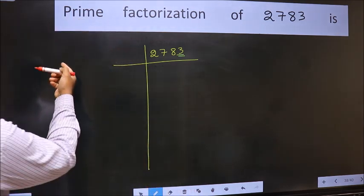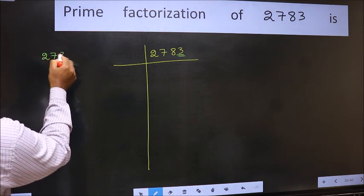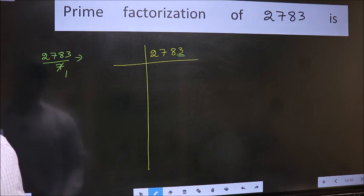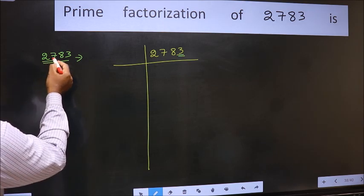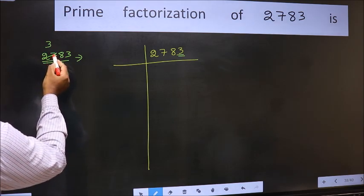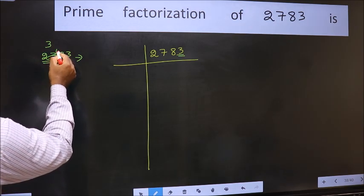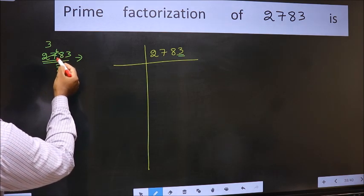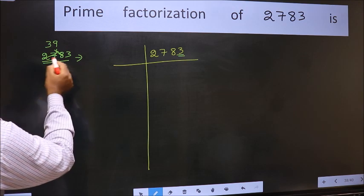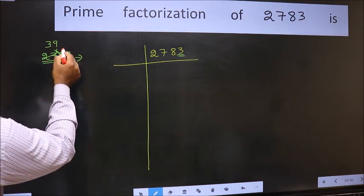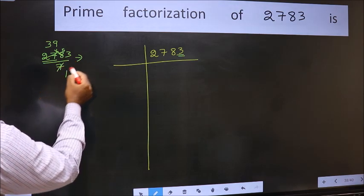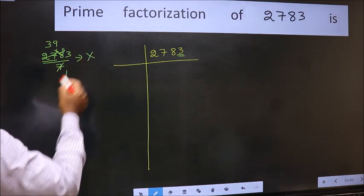Next prime number 7. Let us check divisibility by 7 here. A number close to 27 in 7 table is 7×3 is 21. 27 minus 21 is 6, 6 carried forward gives 68. A number close to 68 in 7 table is 7×9 is 63. 68 minus 63 is 5, 5 carried forward gives 53. We don't get 53 in 7 table. So this is not divisible by 7.